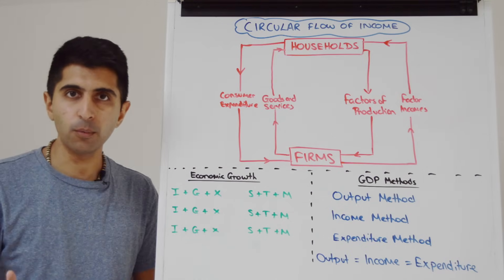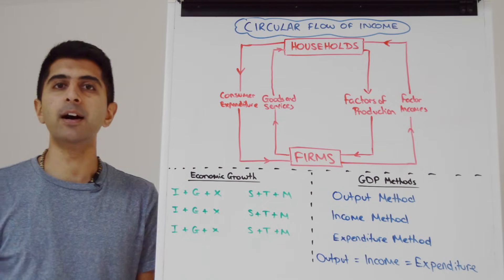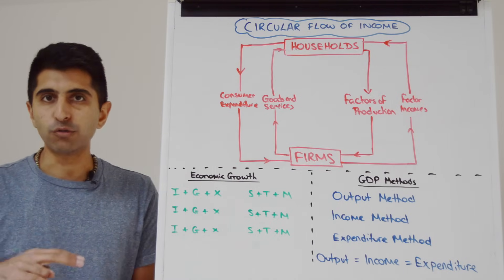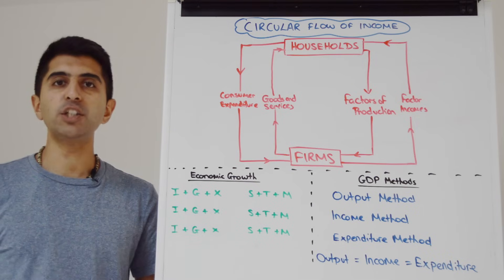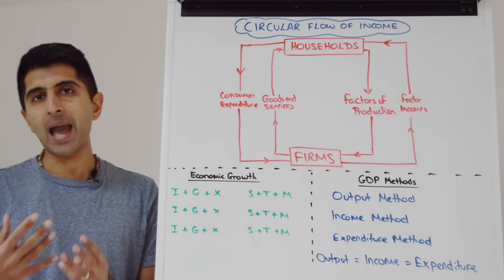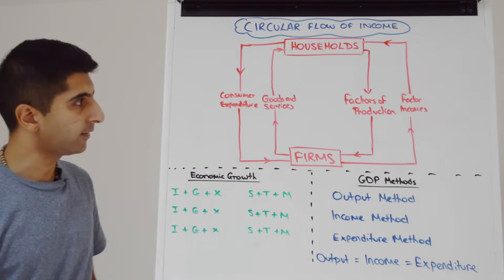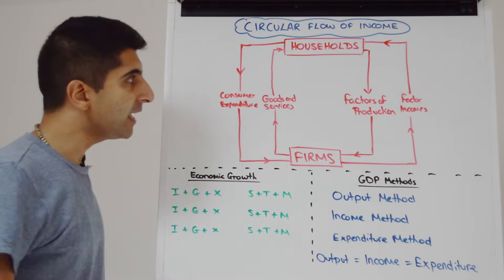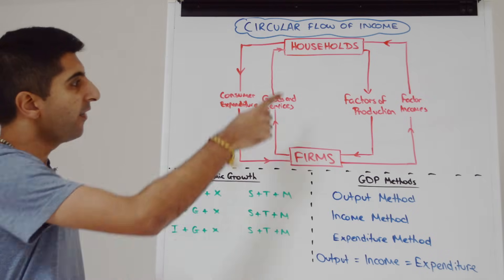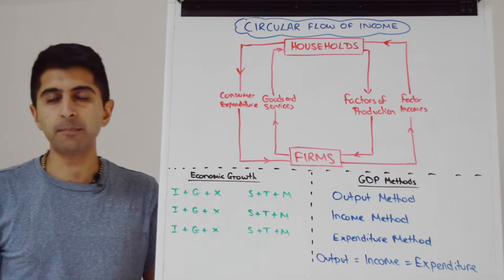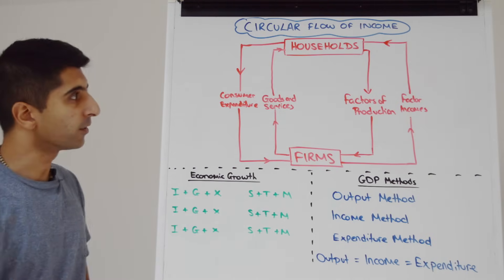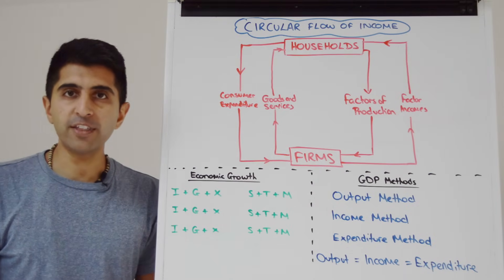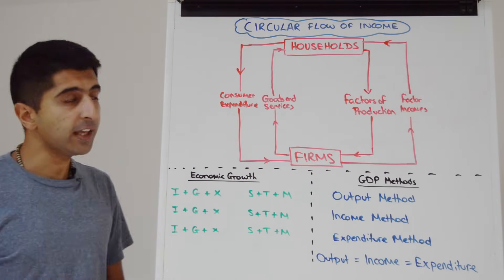Each factor of production has a reward. The reward to labor is wages and salaries. The reward for land is rent. The reward for entrepreneurship is profit. The reward for capital is interest. These are the four factor incomes that households receive, and they spend them on the goods and services made by firms. This gives us the circular flow of income — the movement of spending and income throughout the economy.